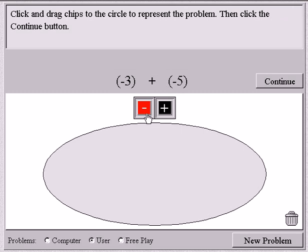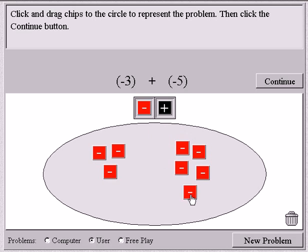So you can practice negative numbers. So the first one says negative 3, so I'm going to pull in 3 negative chips. And the second number says negative 5, so I'm going to pull in 5 negative chips. So this models the negative 3 plus negative 5, and I'm going to hit continue.